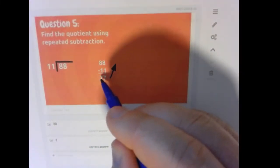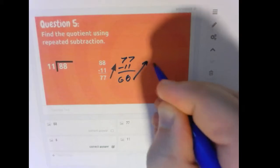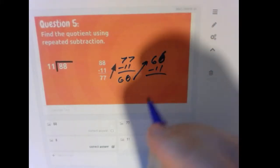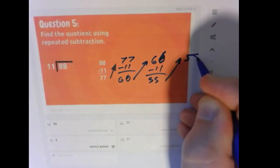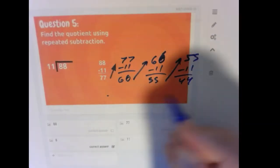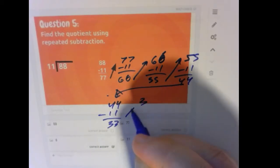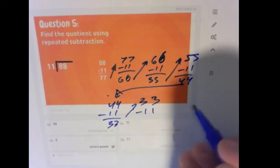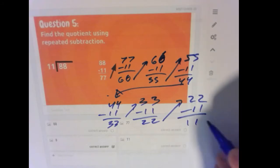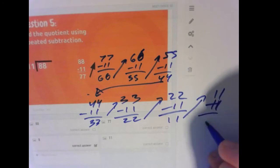88 take away 11 is 77. 77 take away 11, 66. 66 take away 11, 55. 55 take away 11, 44. Let's go this way. 44 take away 11, 33. 33 take away 11, 22. 22 take away 11 is 11. And 11 take away 11 is 0.